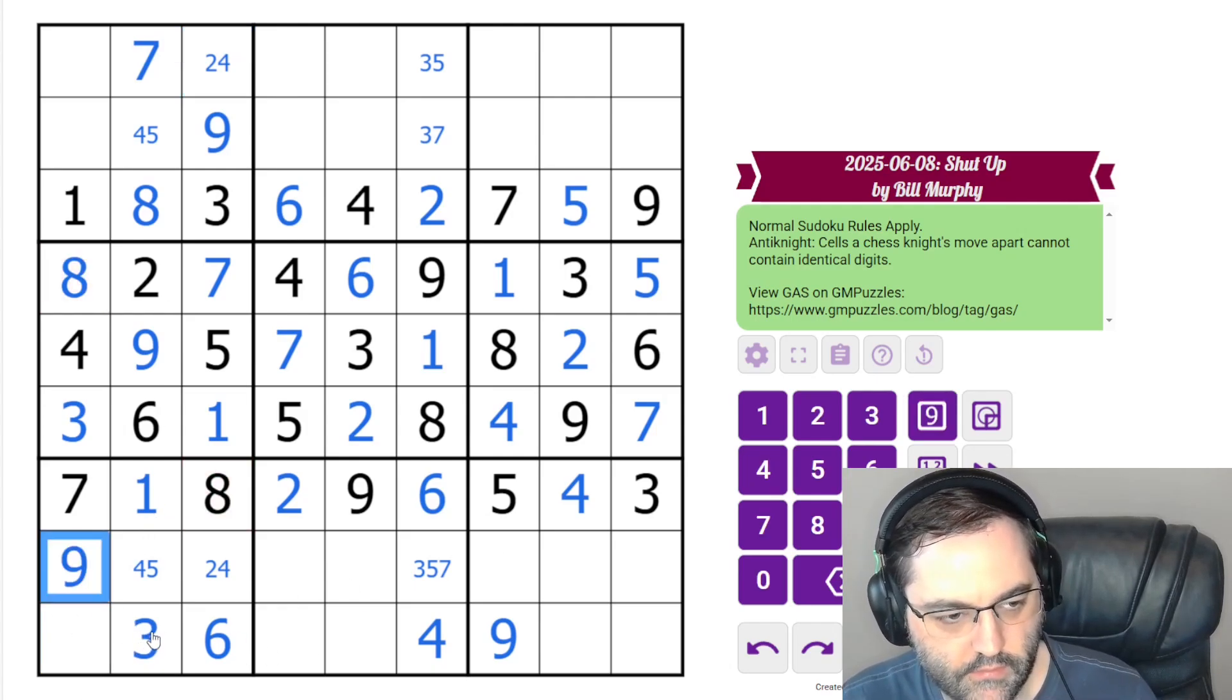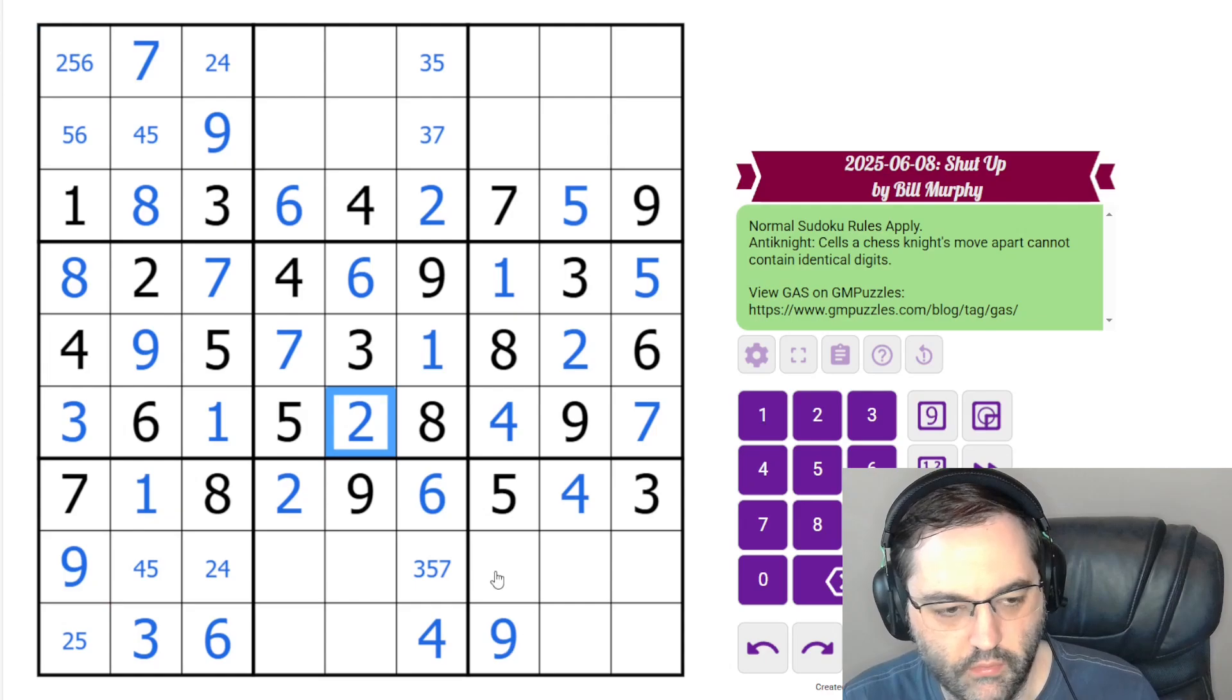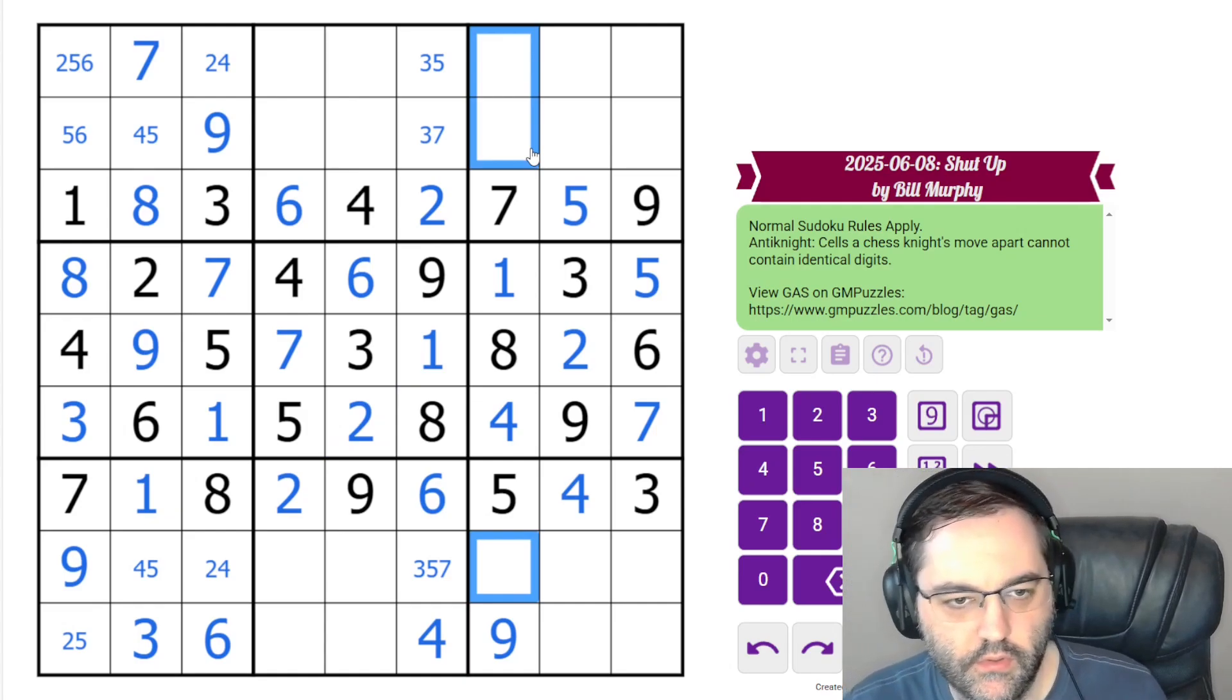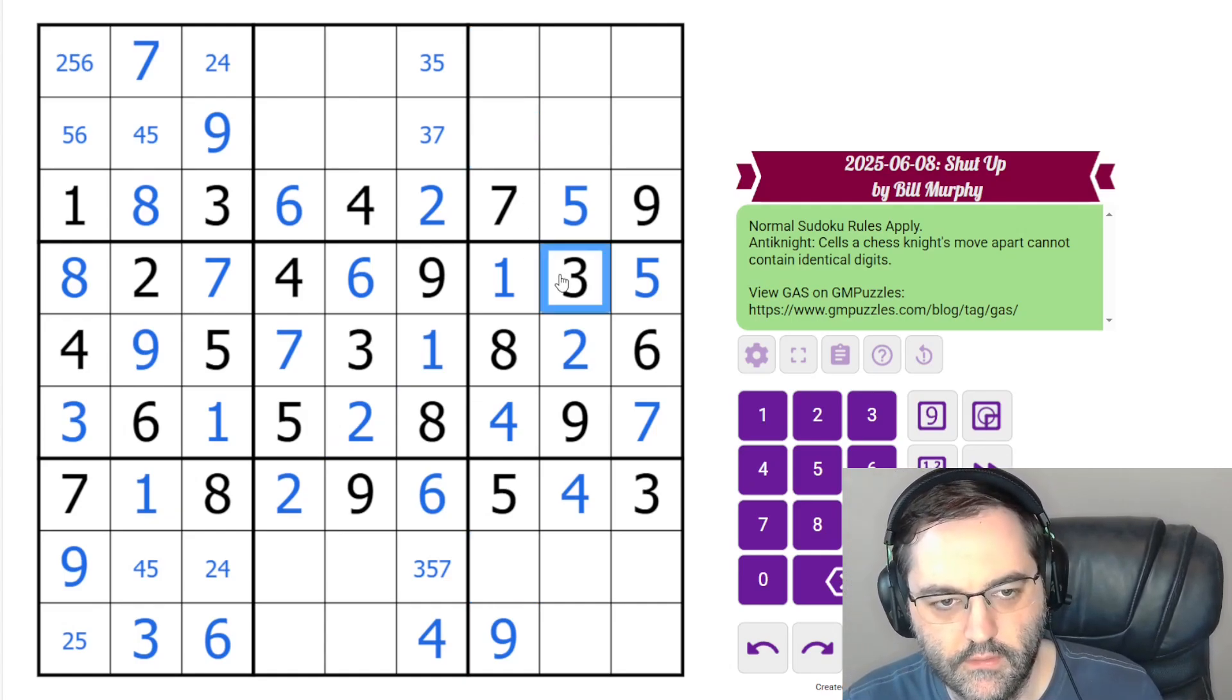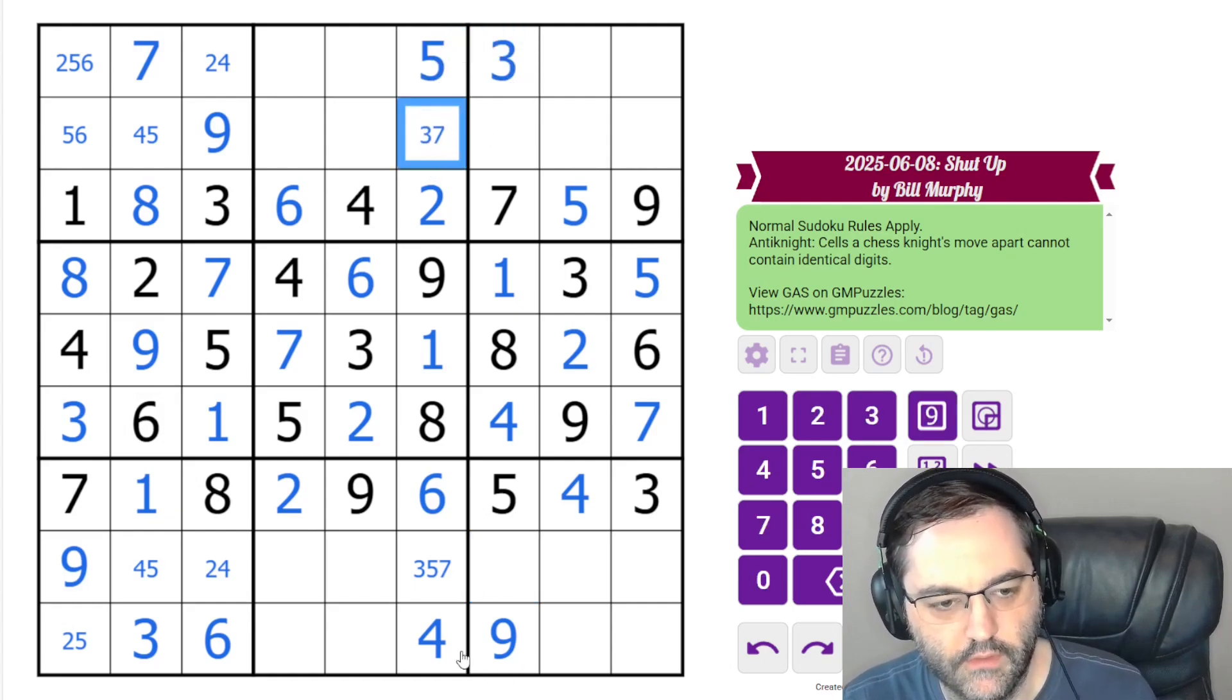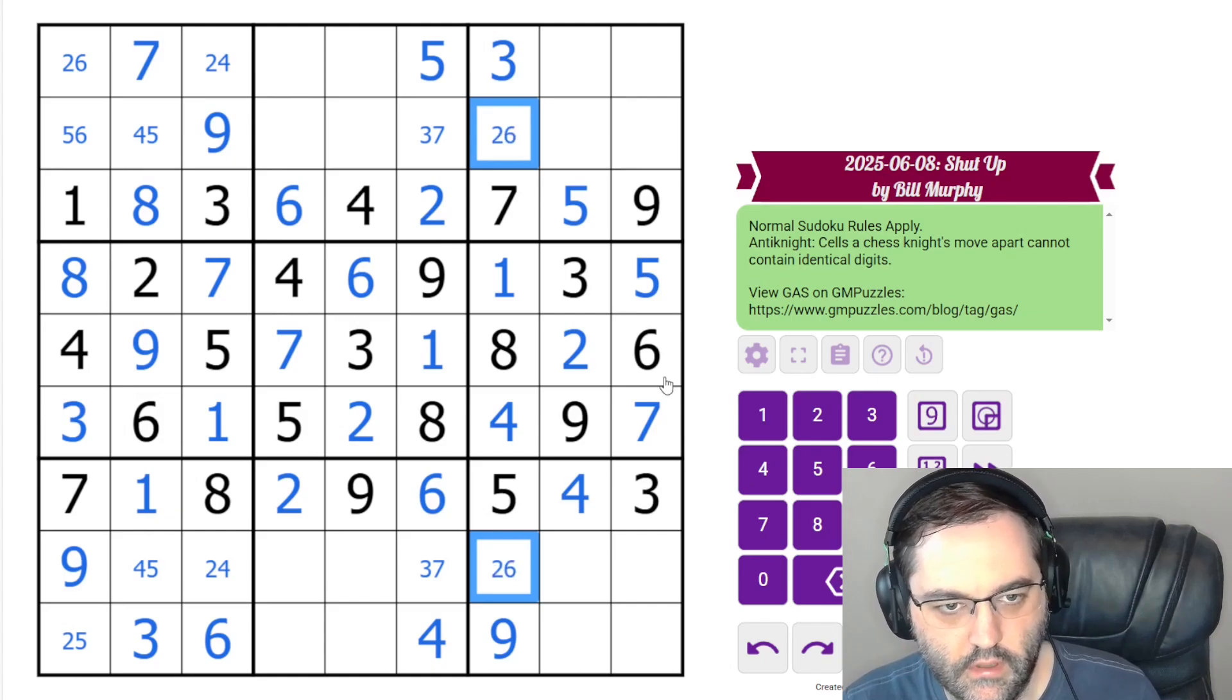Over here, we still need a nine, so this is nine. This is two or five. That one's not two. The rest of this column, we need two, three, six. This cell sees three, and this cell sees three, so this is our three. That's going up there and resolves the five here.